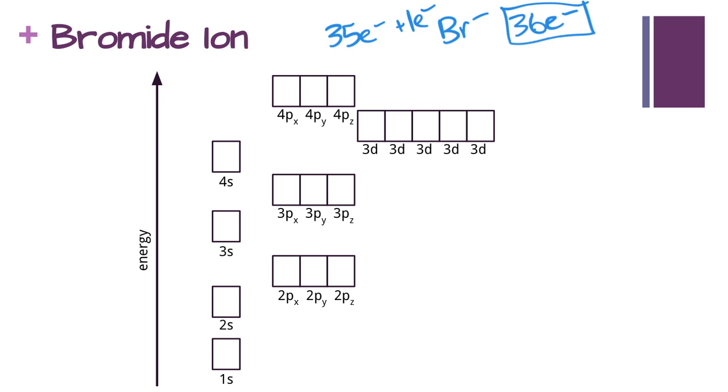We're just going to start filling up again starting with 1s—that's two—and then 2s is two. 2p we go singles and then we double, so that's ten. 3s is 12, and then we got 13, 14, 15, 16, 17, 18, so we got to keep going.